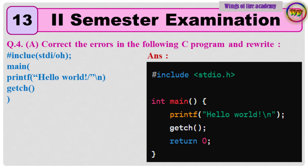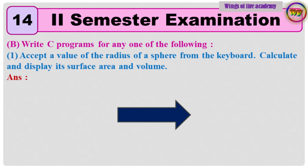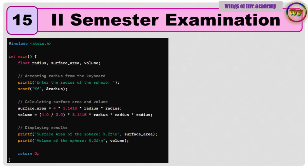Question 4A: Correct the errors in the following C program and rewrite. The question and answer are given directly on screen. Question 4B: Write C programs for any one of the following. 1. Accept the value of the radius of a sphere from the keyboard, calculate and display its surface area and volume. Answer is given directly.